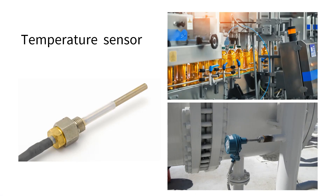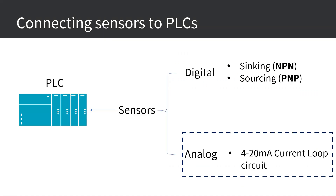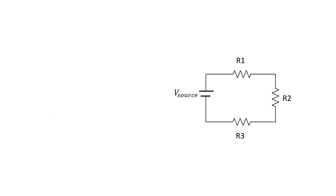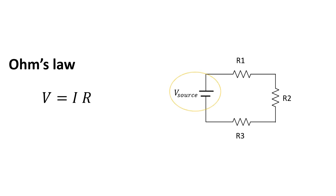For analog sensors, an example is a temperature sensor. We use the 4 to 20 milliamps current loop for analog sensors. To understand the basis of the 4 to 20 milliamps concept, let's look at a circuit covering Ohm's law, which is one of the fundamental electrical concepts. In this circuit we have a voltage source and three resistors in series representing loads.